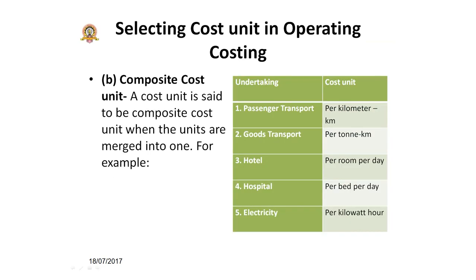If you are using multiple cost units and want to calculate the cost of a service, you go for a composite cost unit, where you merge two units together. For example, in a passenger transportation company, if you want to calculate the cost per passenger per kilometer — carrying one person in a car or bus for one or two kilometers — you are combining two cost units: one is the person and the other is the kilometer. In the case of goods transportation, you calculate the cost to carry one ton of goods per kilometer, combining tons and kilometers.